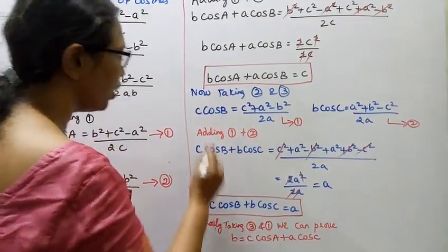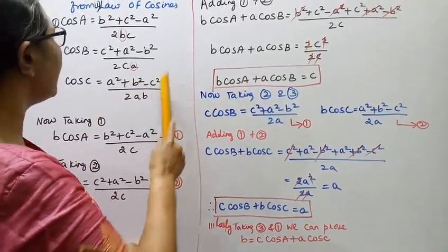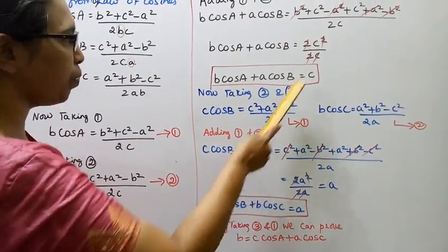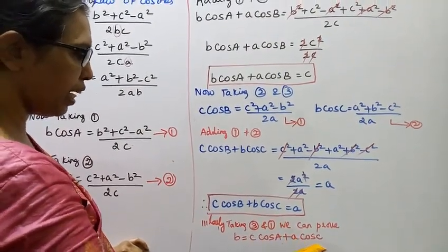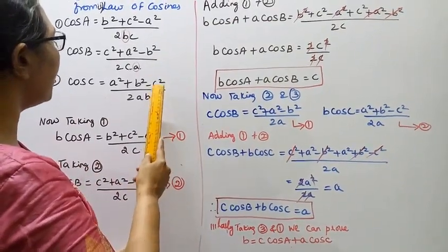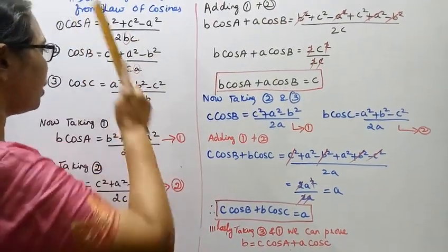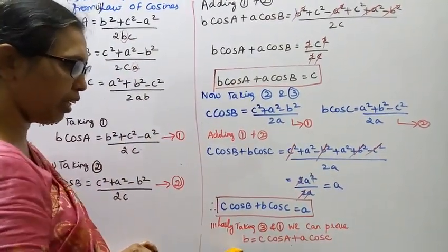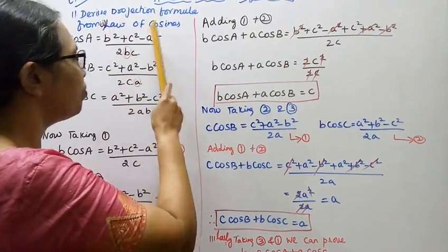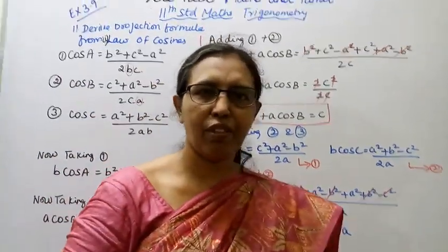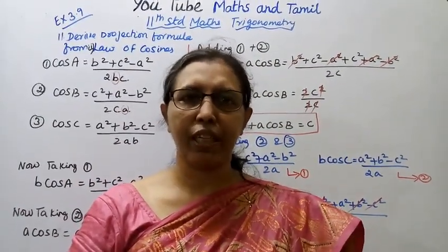For the second condition, similarly taking equations 3 and 1, we can prove b = c cos A + a cos C. That is the complete derivation of the projection formula from the law of cosines. This channel helps you to get 100 marks. Please subscribe to the channel and click the like button.